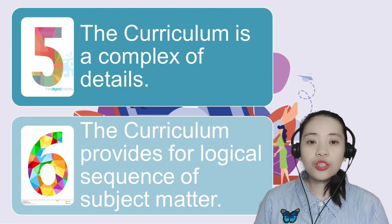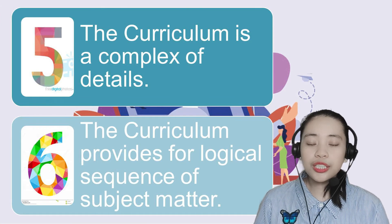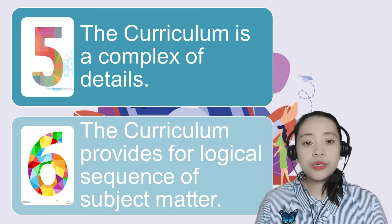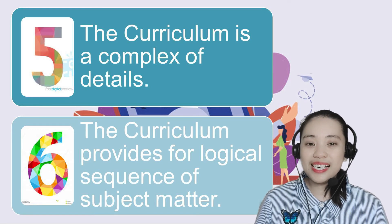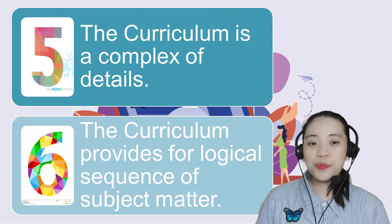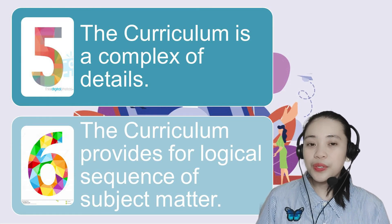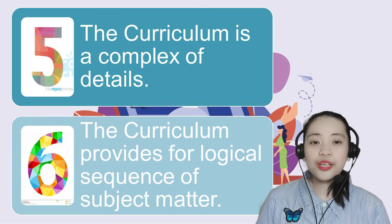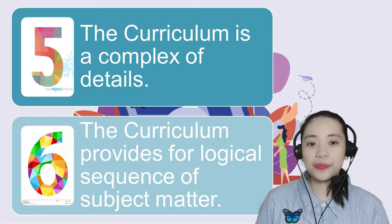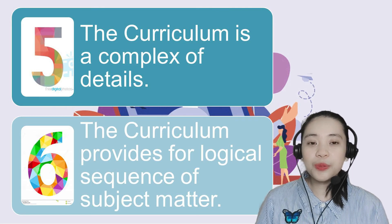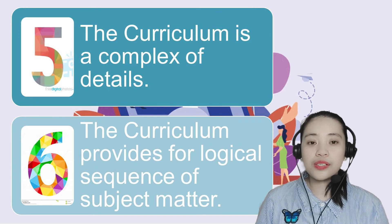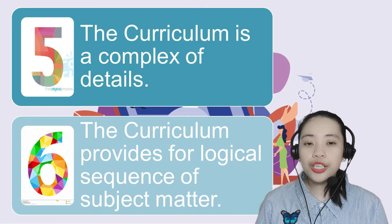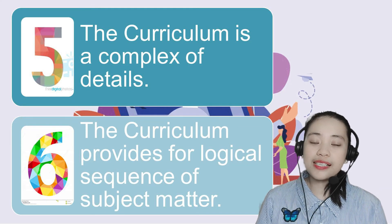Fifth, the curriculum is a complex of details. A good curriculum provides proper instructional equipment and meeting places that are conducive to learning. It includes the student-teacher relationship, guidance and counseling program, health services, school and community projects, library and laboratories, and other school-related work experiences. Sixth, the curriculum provides for the logical sequence of subject matter. Learning is developmental, and classes and activities should be planned. A good curriculum provides continuity of experiences.